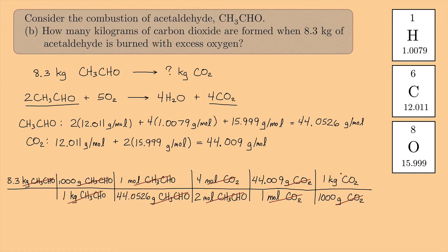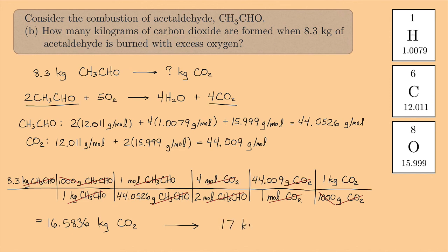The 1,000s from the kg-to-g conversions cancel each other out. On the calculator: 8.3 × 4 × 44.009 ÷ (44.0526 × 2) = 16.5836 kilograms of CO₂. We were given two significant figures in the problem, so the final answer is 17 kilograms of carbon dioxide.